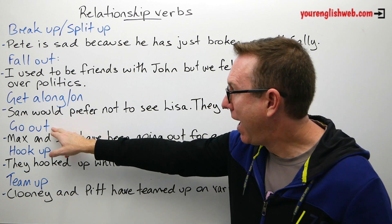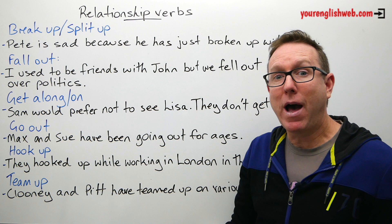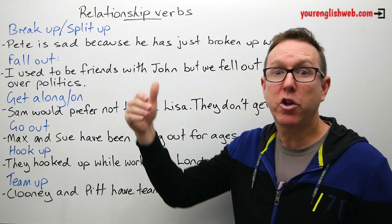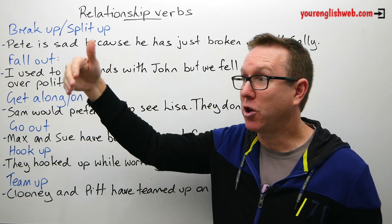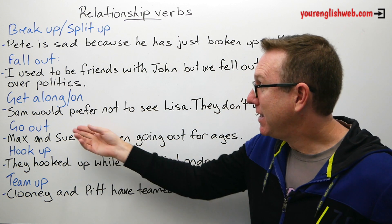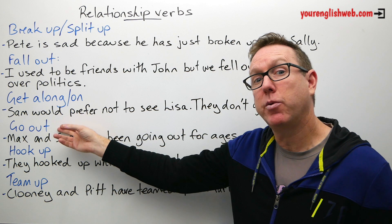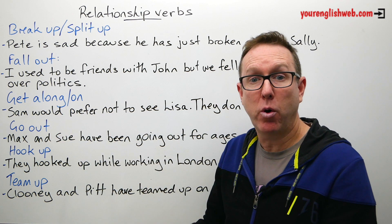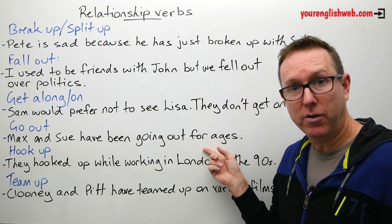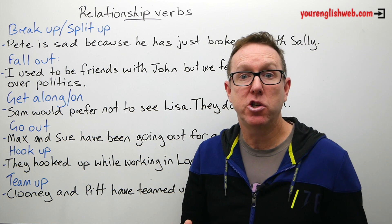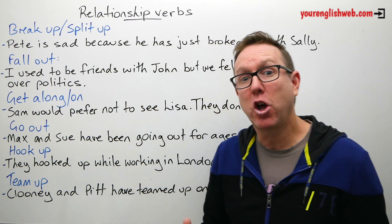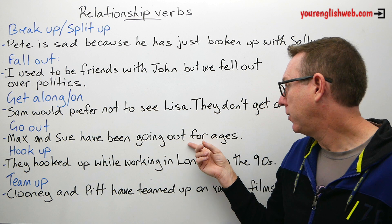The next phrasal verb is 'to go out.' If you go out with someone, it means you are in a romantic relationship with them — not just going to a bar or nightclub, but being in a relationship. For example: Max and Sue have been going out for ages — they've been in a relationship together for a long time.